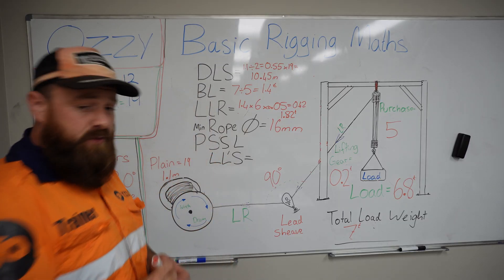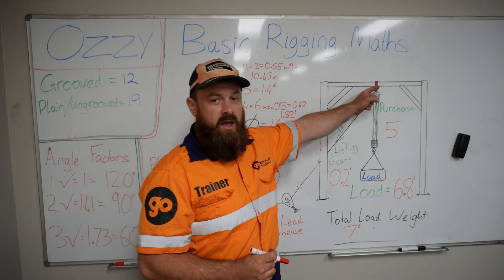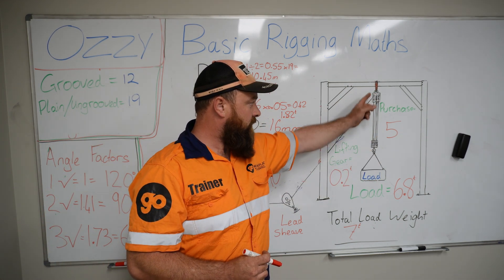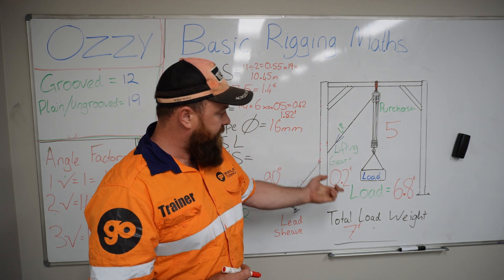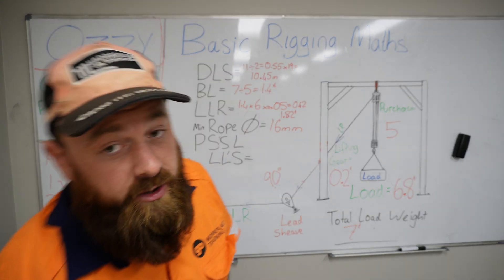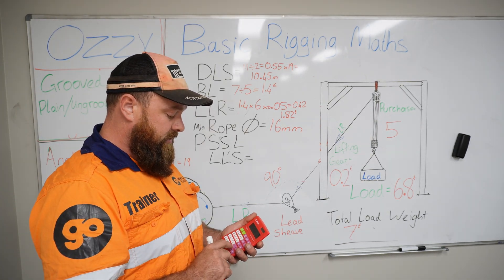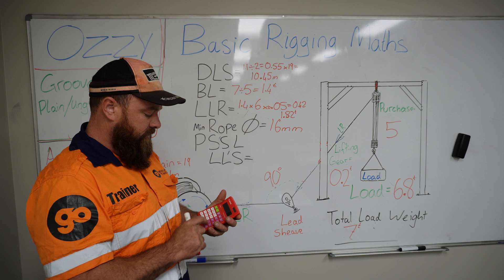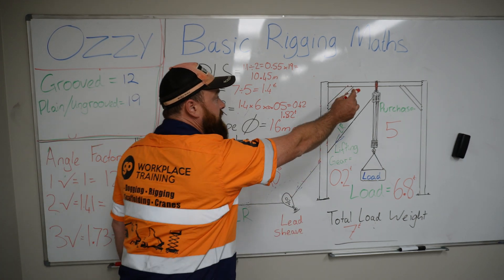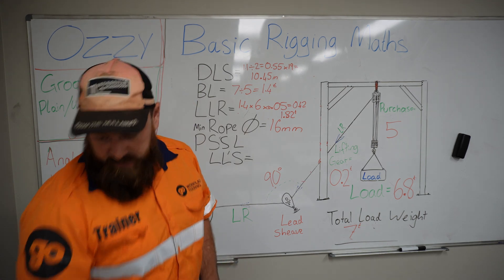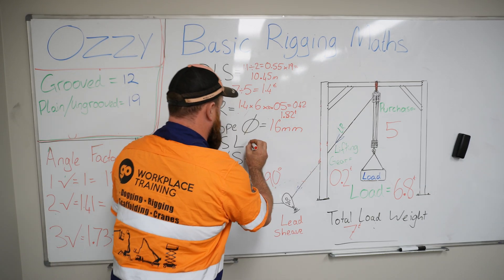Now we need to find out the purchase support sling load. Looking at what's underneath it — we have all the lifting gear, the load, and we also need to pull down to lift that load up. So we know there's going to be 7 tonnes — that's the total load weight. 7 plus 1.82 equals 8.82. Our head sling load needs to be able to withstand 8.82 tonnes.